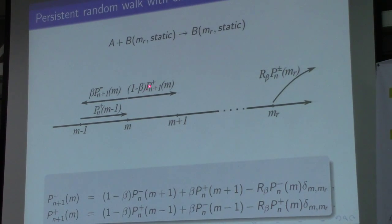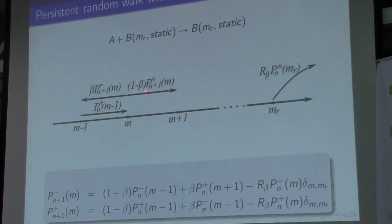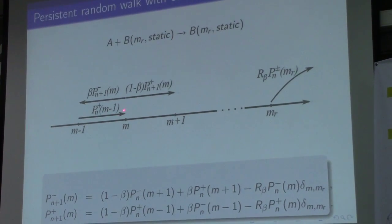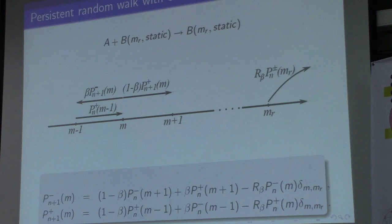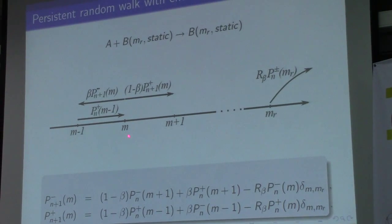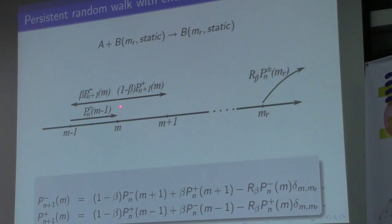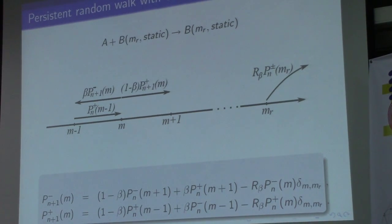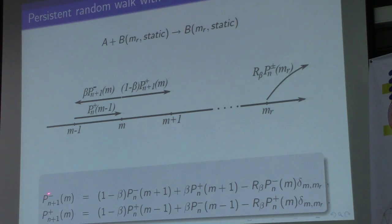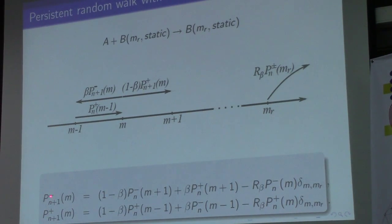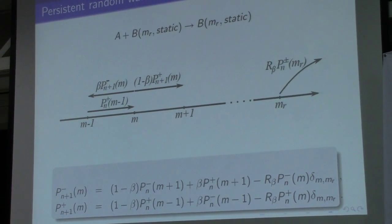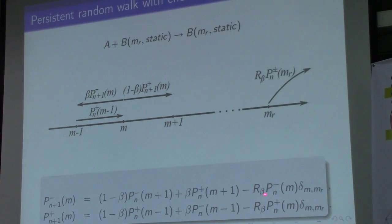The parameter delta controls the correlation and can be interpreted as the probability that the direction of the velocity vector of the particle is changed in the next step. L_beta is the reaction rate in this model. The upper index — minus or plus — denotes the direction of the velocity vector of the particle.